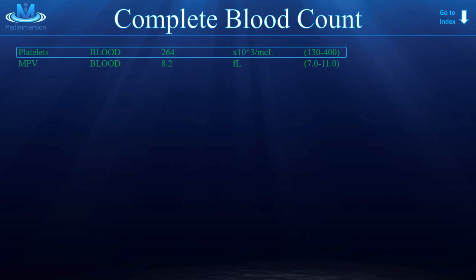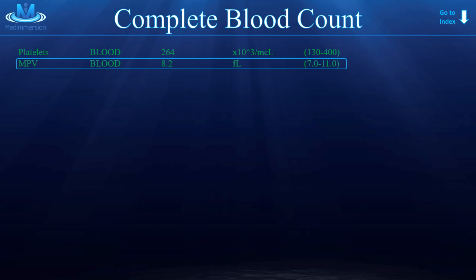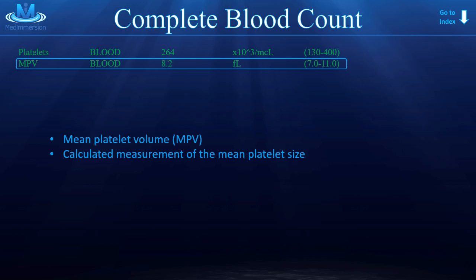Now into the MPV, which stands for mean platelet volume. That's almost exactly what it sounds like — it's the calculated measurement of platelet size. One cheat you can use is that platelet size often increases with increased production, and decreases with decreased production. It's not always the case, but it's helpful if you get stuck. We use the MPV to help diagnose different causes of changes to platelet production and to get a good differential diagnosis.